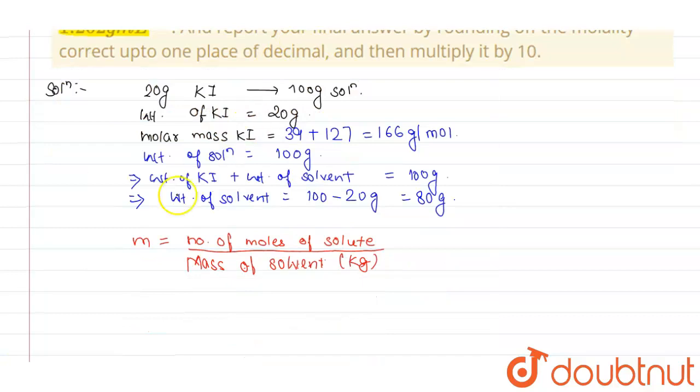So, moles of solute will be, moles of solute, solute here is KI, so moles of KI will be given mass is 20 gram by 166 gram per mol.